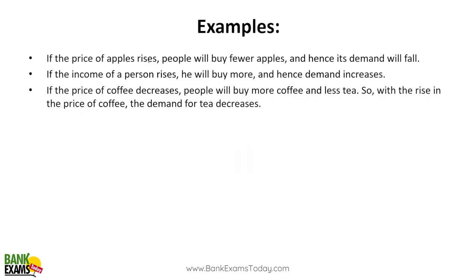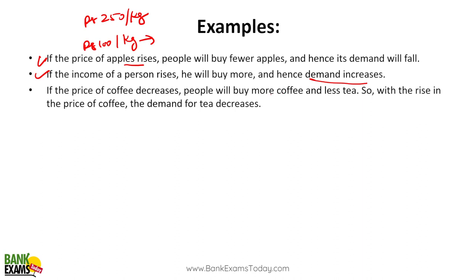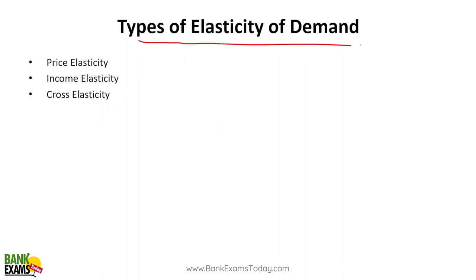For example, if the price of apples rises, people will buy fewer apples. Maybe you're buying 1 kg or 2 kg, but if the price rises to 250 rupees per kg, you may switch to another fruit. If the income of a person rises, he will buy more and demand increases. If you're making more money, you'll buy more groceries and spend more on entertainment. And if the price of coffee decreases, people will buy more coffee and less tea. So the types of elasticity of demand are: price elasticity, income elasticity, and cross elasticity.